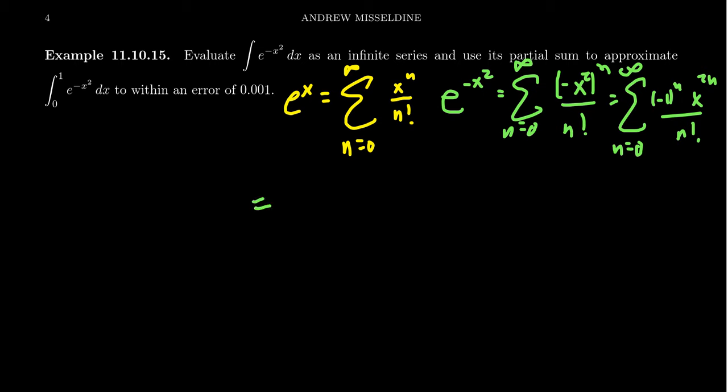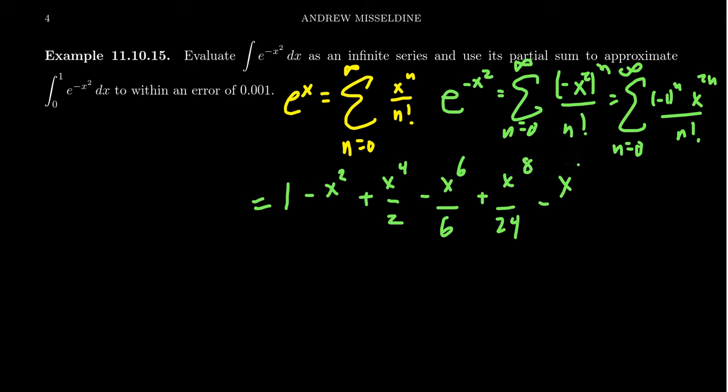And so if we write down the first couple terms here, we're going to get 1 minus x squared over 1 factorial, plus x to the 4th over 2 factorial which is 2, minus x to the 6th over 3 factorial which is 6, plus x to the 8th over 4 factorial which is 24, minus x to the 10th over 5 factorial which is 120, and plus x to the 12th over 720 which is 6 factorial. And that's probably enough here.